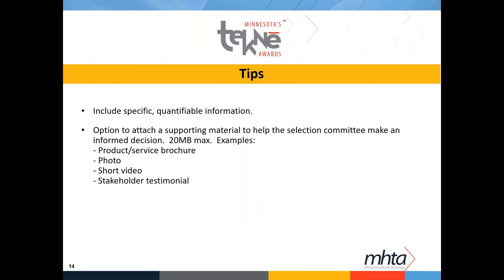A couple of additional tips: you really want to include specific, quantifiable information. The more information you can include about your technology and how you're advancing the category, the better you'll do. There is an option to attach supporting material to help the judging committee make an informed decision — it's 20 megabytes max and you can submit one attachment. You can compile multiple items into one document. Examples include a product or service brochure, a photo, a short video, or stakeholder testimonials.